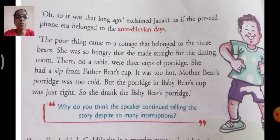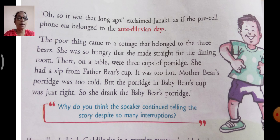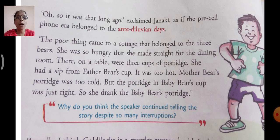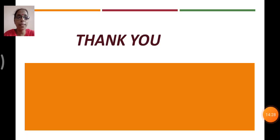Here we can see that the mother is trying to tell the story to the children, and the children are having such silly questions, trying to relate it with actual life and questioning their mother. The mother tries to ignore and proceed with the story, but the children are not allowing her to proceed. What happened in the story of Goldilocks further, we will see in our next class. We will stop here for today. Thank you, children.